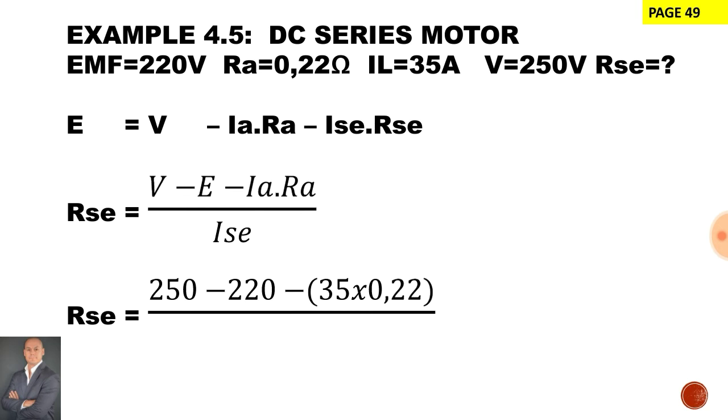Now divided by ISC, in other words, what is the current through the series winding? Well current remains the same in a series circuit. Therefore the current through the series winding will be the same as the current being drawn from the supply. And that gives us a value of 0.637 ohms for our series winding.